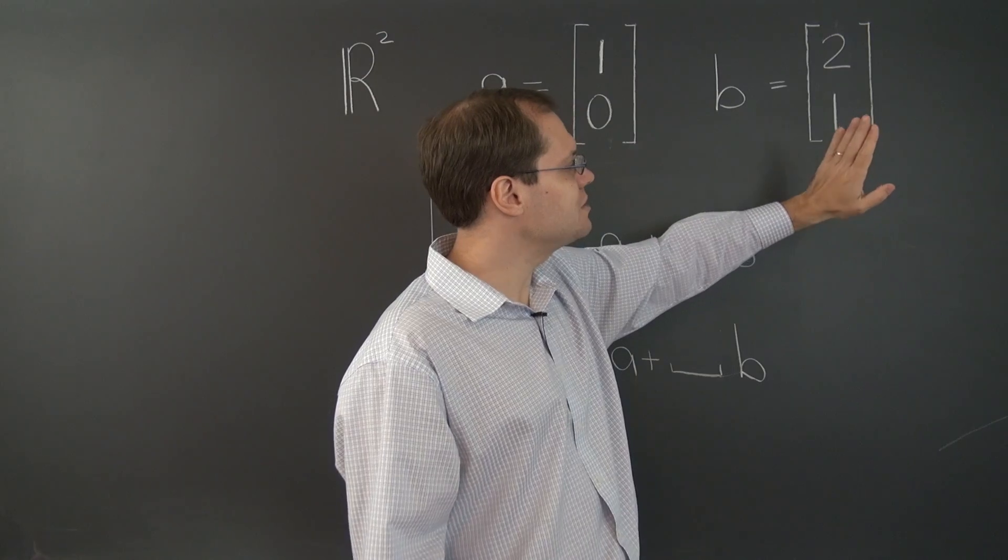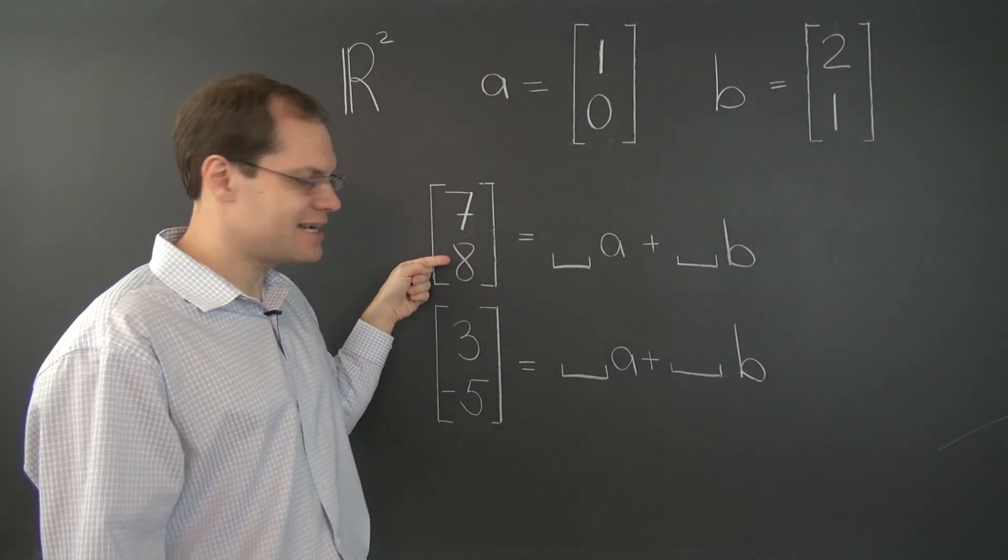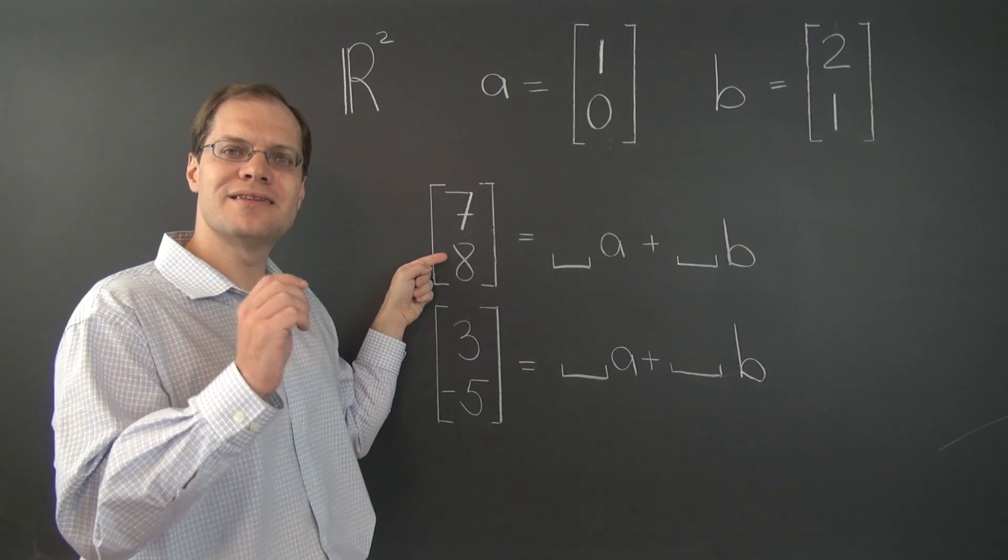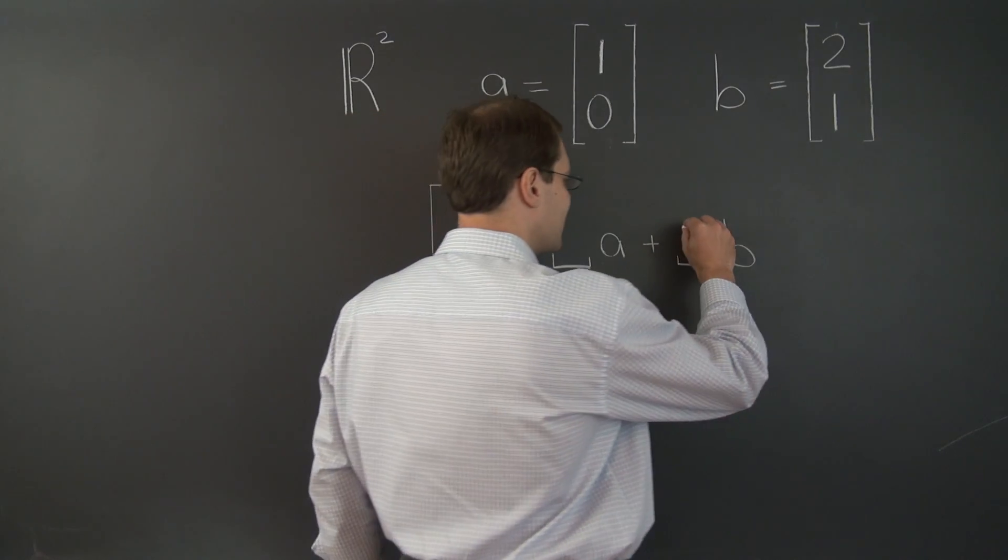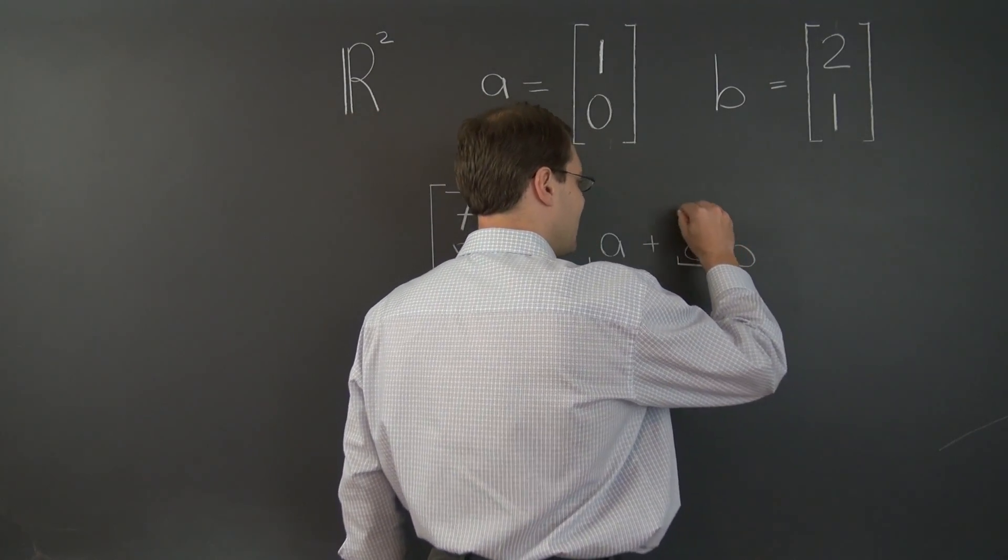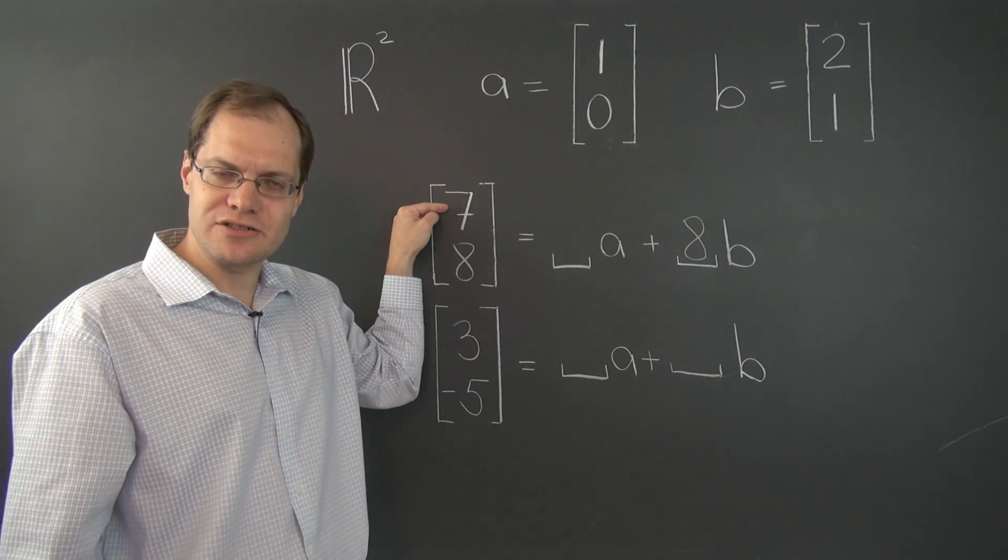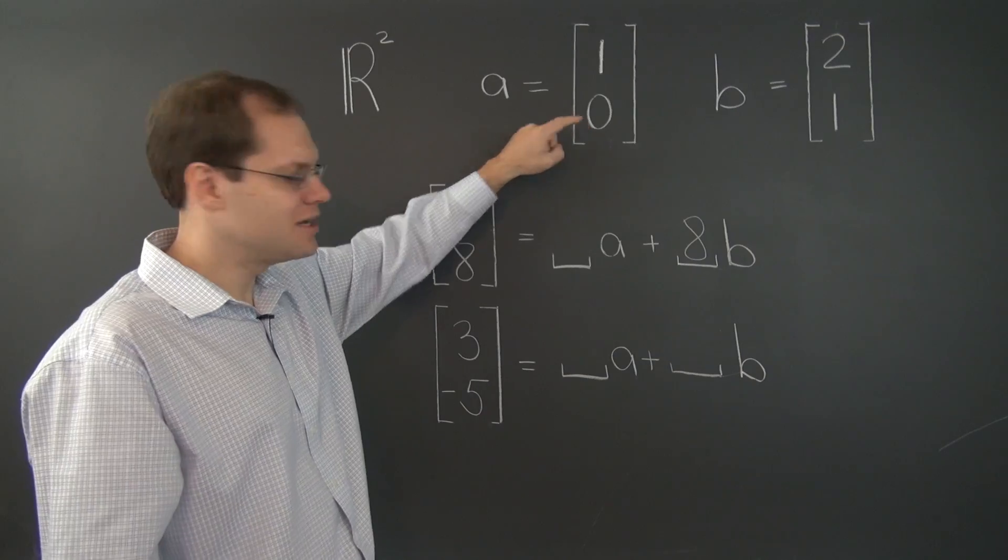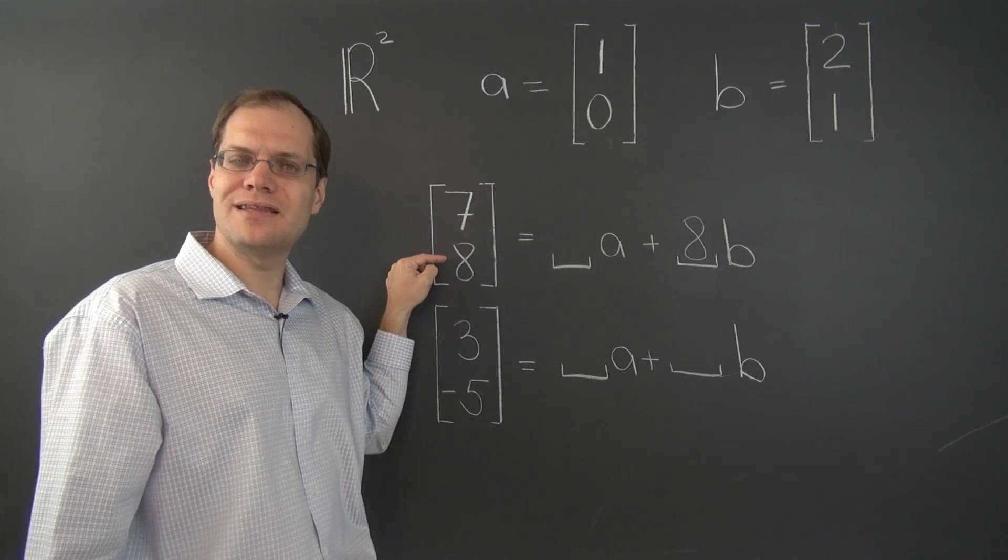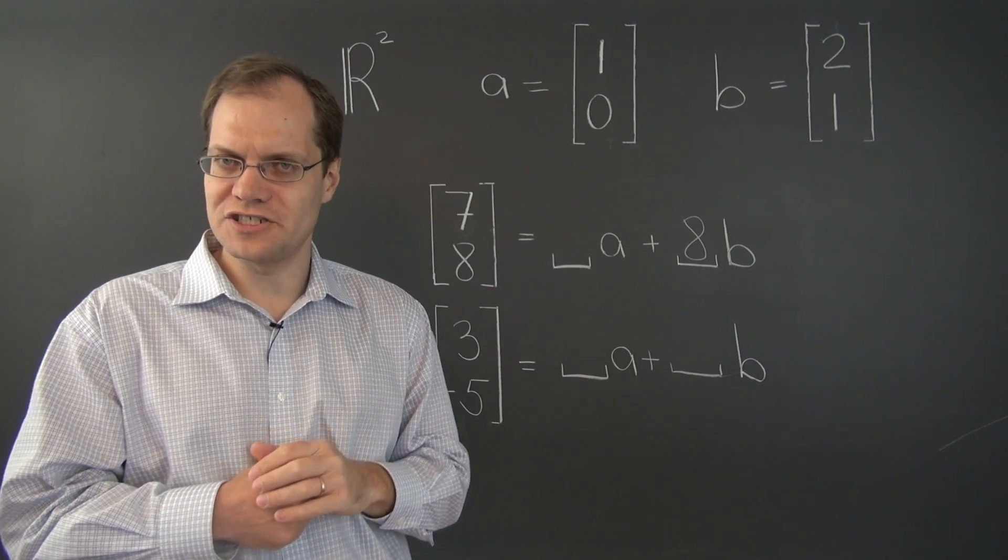Looking at this vector, we need to take 8 of this vector to match the second entry. So we're determining the second coefficient, matching the second entry first by taking 8 of B. And then in a moment, when we use A to match the first entry, because A has a 0 here, it will not mess up the 8. So this is the right order to determine the coefficients.